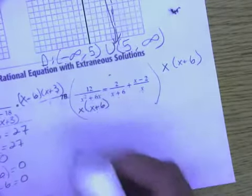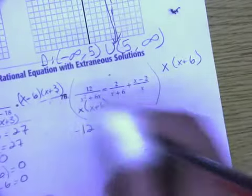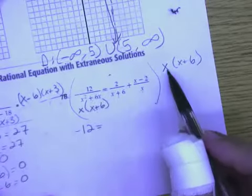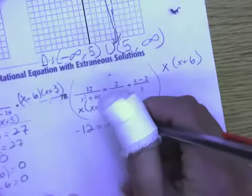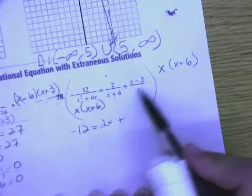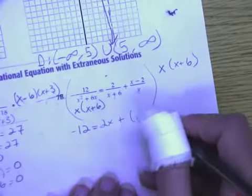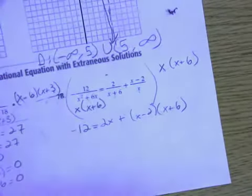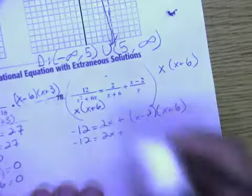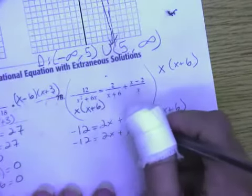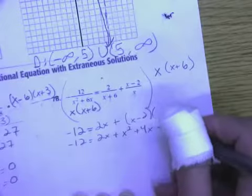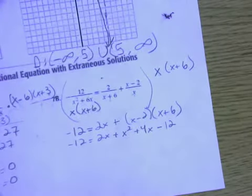It's just going to cancel out the denominator on the left. So, I'll have negative 12 equal to, in this fraction, the x plus 6s will cancel out, but I'd have to multiply the x times 2, so I have 2x. And then, plus, when I multiply this term by that least common denominator, this time it's my x's that cancel out, and I have to take that x minus 2 and multiply it by x plus 6. So, that means I need to FOIL. So, I have negative 12 equal to 2x plus x squared plus 4x, because I get 6x minus 2x, combining to give me 4x, minus 12.